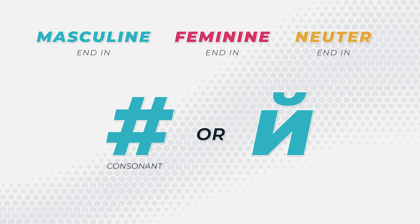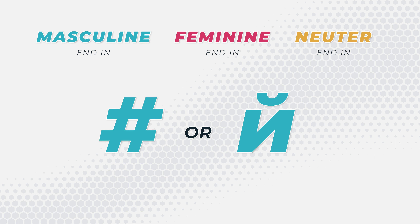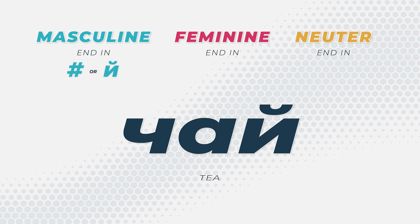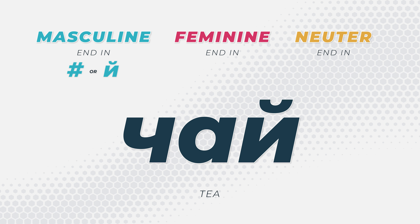Words ending in a consonant or in a краткое are masculine. So let's take, for example, стул — a chair. You can see here that it ends in an L, that's a consonant, so we know that стул is masculine. If we take чай, which is tea, we see this ends in a краткое, and we know that any word ending in a consonant or in a краткое is masculine, so чай is masculine.